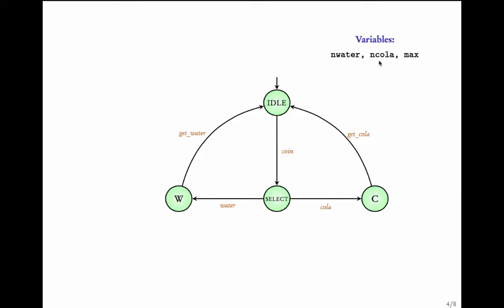Once in state w, it remembers that the user has selected water, ejects a water bottle, and goes back to the idle state. The functioning of this vending machine depends on the number of water bottles and the number of cola cans currently available. Let n_water be the current number of water bottles and n_cola be the current number of cola cans. The maximum capacity for each is max.